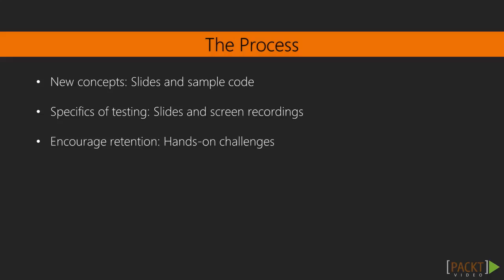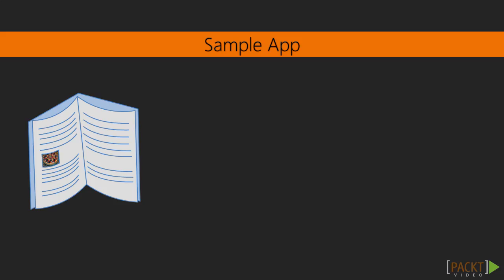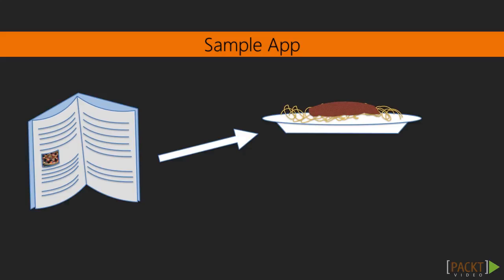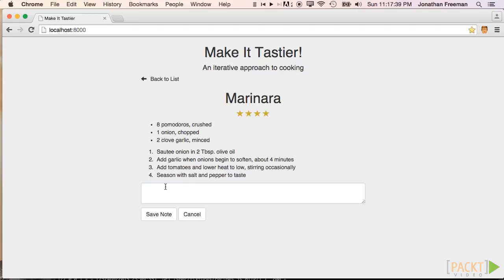In order to provide some direction to our examples, we'll be creating and testing a sample application. The sample application is based on one of my other passions: cooking. When trying to cook something new, I'll look online and in cookbooks for a recipe, make the dish as the recipe asks, and often want to tailor it to my own tastes. I might write modifications in the margin of the cookbook or save a copy of the online recipe and make some changes locally. The problem is that a month or two later, I have trouble remembering where on my computer or in which cookbook that modified recipe for Chicken Riggies is — and I'll just resort to finding another recipe online, scrapping my previous work and experience.